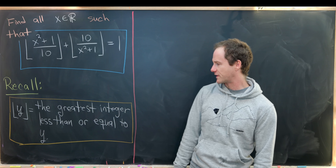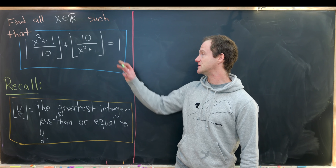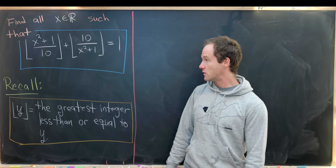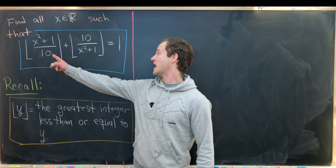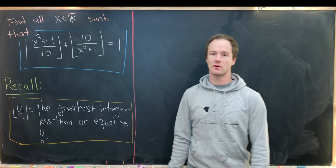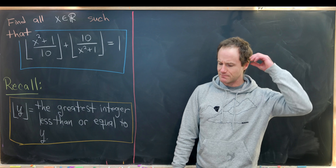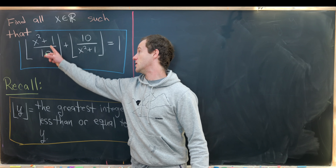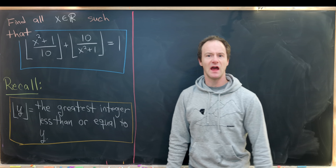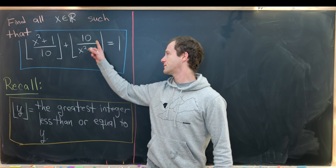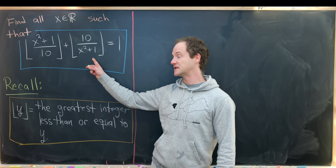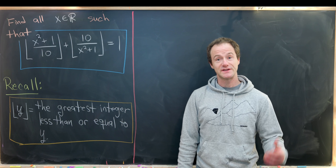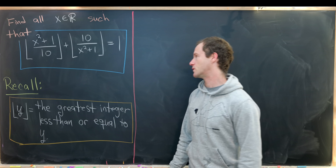Now that we've recalled what the greatest integer function is, let's jump into solving our equation. The first thing to notice is that we have a term and its reciprocal here. That gives us motivation to set a new variable equal to one of these objects, so that the reciprocal of that new variable becomes the other term, giving us a simpler equation to solve.